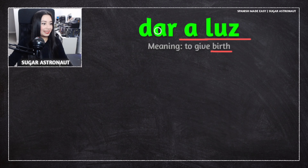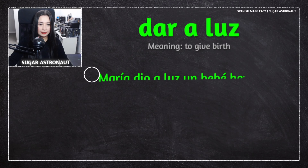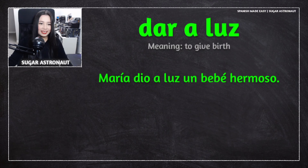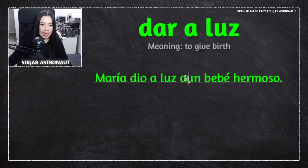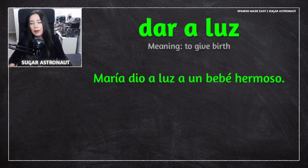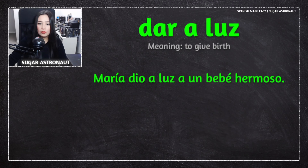Let's look at some examples using this phrase. The first example is: María dio a luz un bebé hermoso. You can also say María dio a luz a un bebé hermoso — you can include that extra 'a.' Both versions are fine, and the second form is commonly said in Spanish.